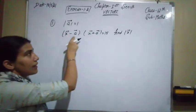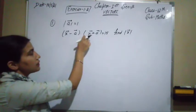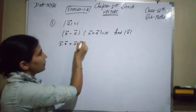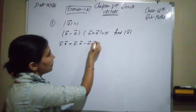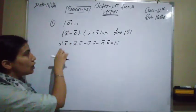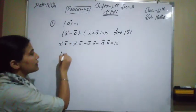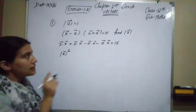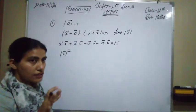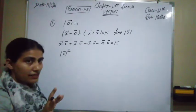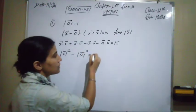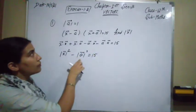We expand the dot product: x⃗·x⃗ + x⃗·a⃗ − a⃗·x⃗ − a⃗·a⃗ = 15. Now x⃗·x⃗ can be written as |x⃗|². The terms x⃗·a⃗ and a⃗·x⃗ are the same in the dot product, so they cancel each other. And a⃗·a⃗ equals |a⃗|².